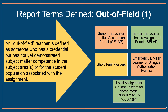An out-of-field teacher is defined as someone who has a credential but has not yet demonstrated subject matter competence in the subject areas for the student population associated with the assignment. An assignment monitoring outcome of OUT-OF-FIELD indicates that one or more relevant attributes of the assignment were authorized by the following limited permits: General Education Limited Assignment Permit (GLAP), Special Education Limited Assignment Permit (CLAP), Short-Term Waivers, Emergency English Learner or Bilingual Authorization Permits, and Local Assignment Options except for those made pursuant to T5-80005B. Local assignment options based on Title V regulations, Section 80005B, were removed from the out-of-field category because there are no credentials for these courses. Examples of courses that require these types of LAOs include Student Government and Advancement via Individual Determination, or AVID courses.